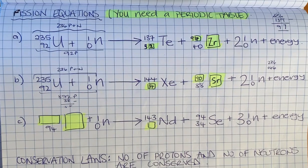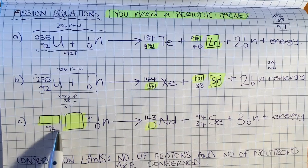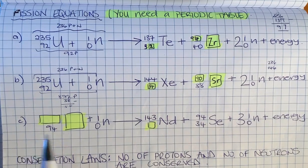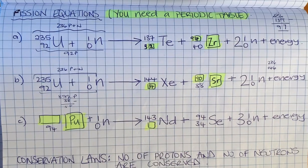That's the answer to B. And C: we've got the 94th element reacting here, which is plutonium with the symbol Pu.